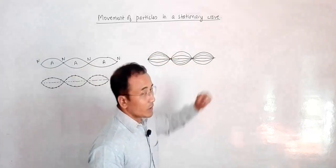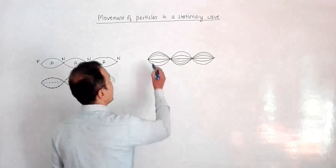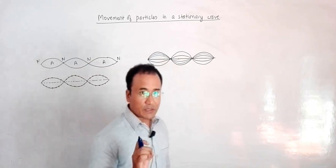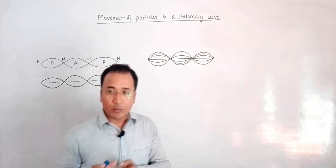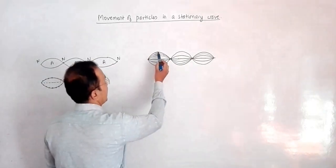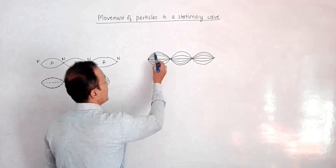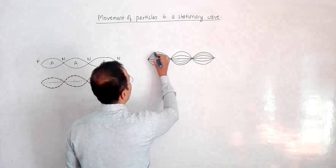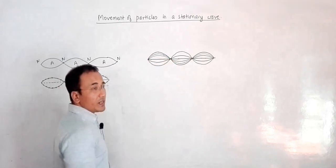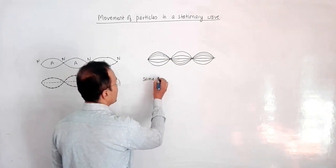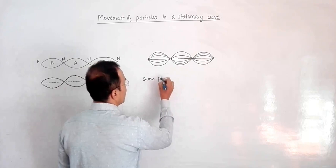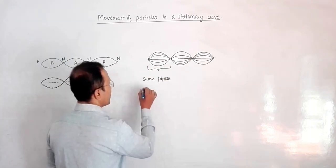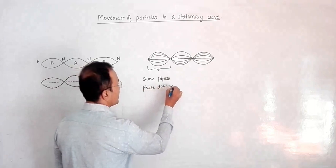Only the particles at the nodes do not move. The particles of this region are all performing the same type of movement at a particular instant — they are all in the same state. If one particle is at its highest point, all others in that region are also at their highest point. If one is in the middle, all are in the middle. So all the particles in this region are in the same phase, meaning phase difference is equal to zero.